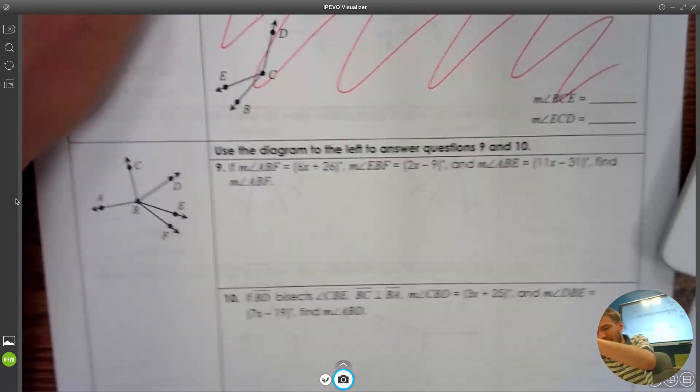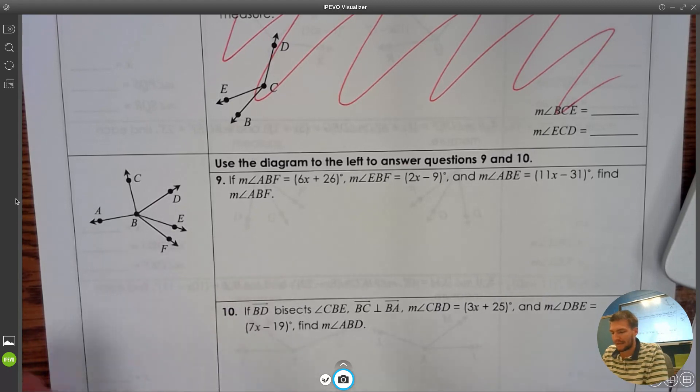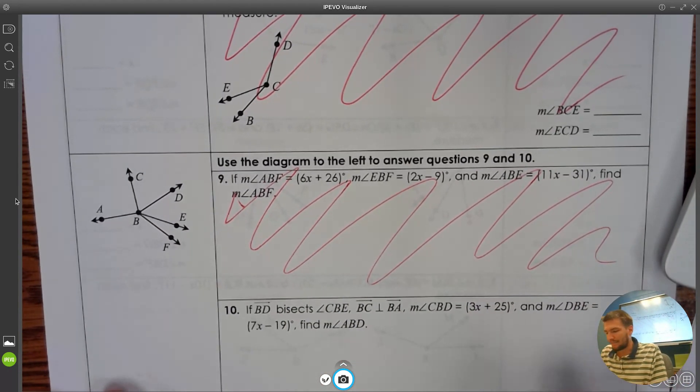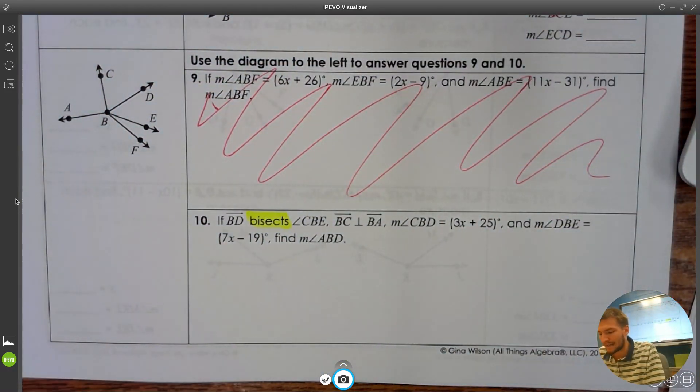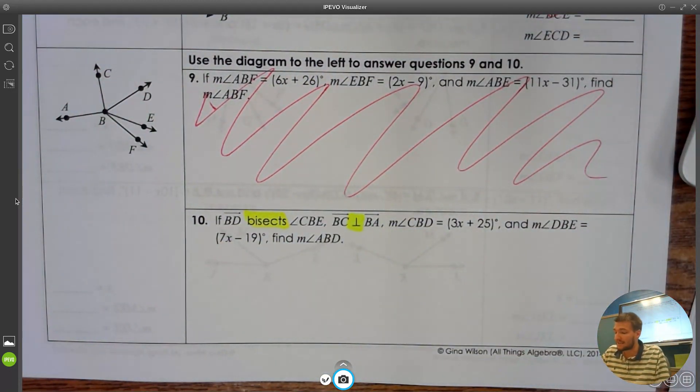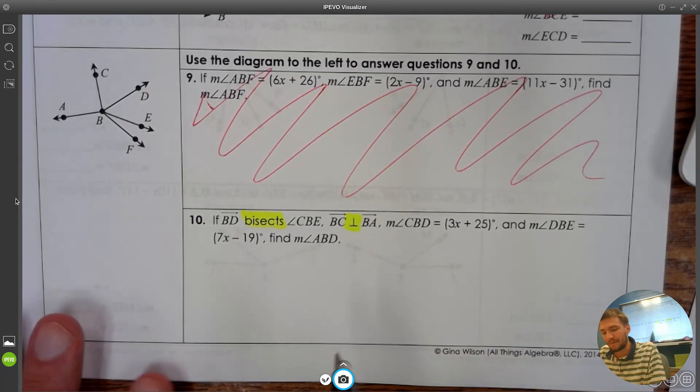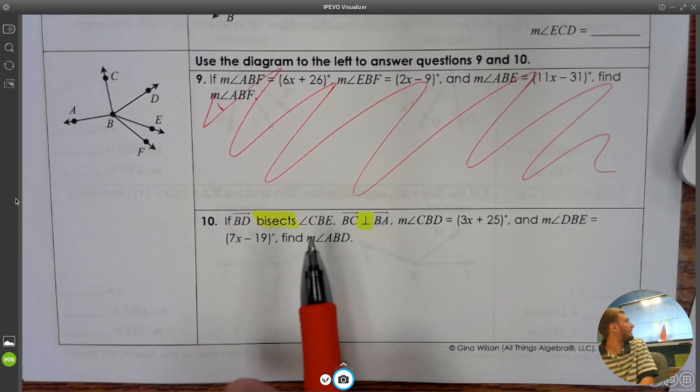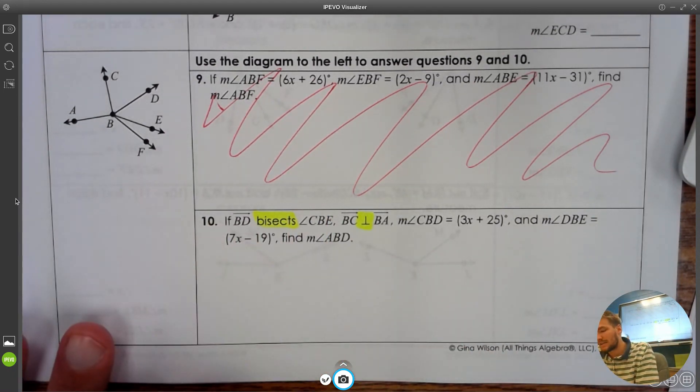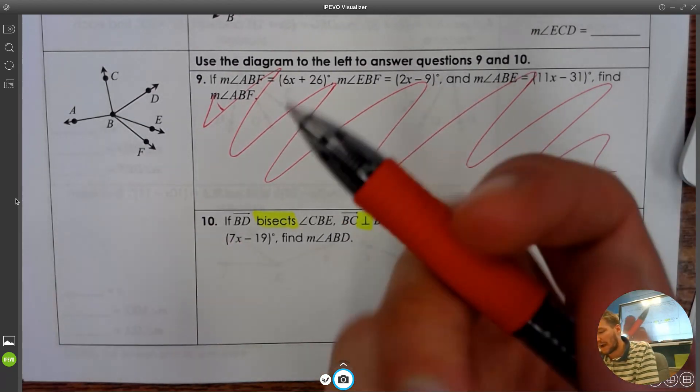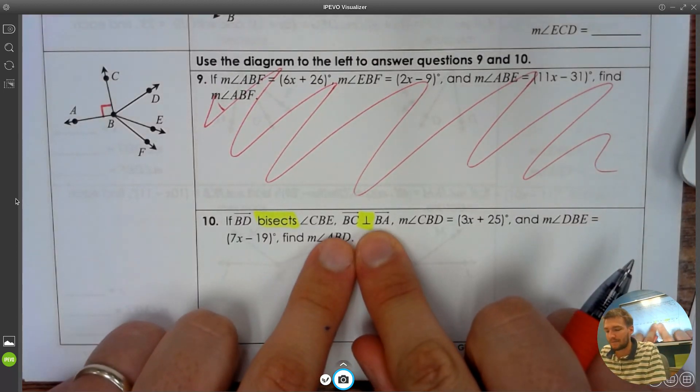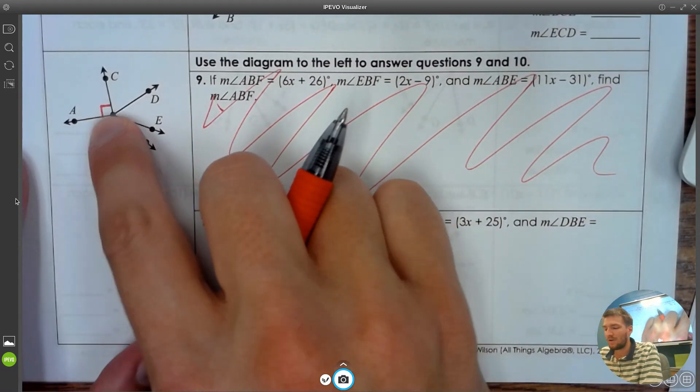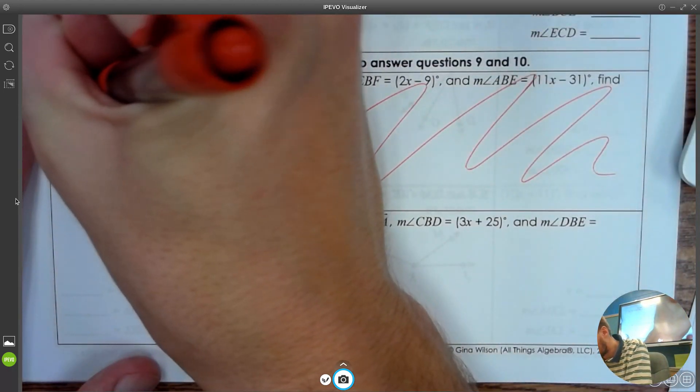At the bottom here, 9 and 10 are both using this information. I want to talk specifically about 10. Because 10 has used one of our favorite words. 10 has used bisects. And I just want to make sure that we're cool with how bisects work. 10 has also thrown us the upside down T, which is kind of nice. What does upside down T mean? Perpendicular. You're correct. So perpendicular tells us we can put a square. Where are we going to put the square into our little corner here?